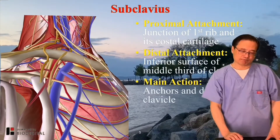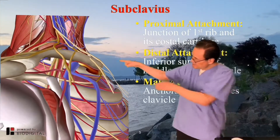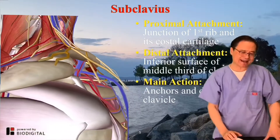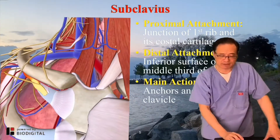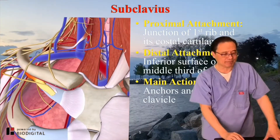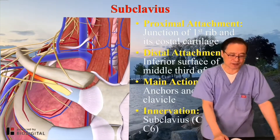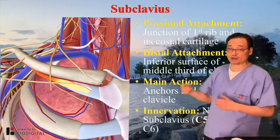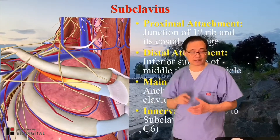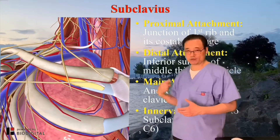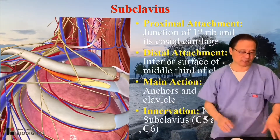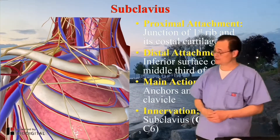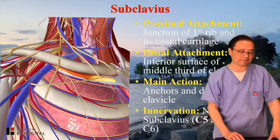Main action: because the fibers run in this direction, they depress the clavicle. The innervating nerve is the nerve to subclavius — remember the brachial plexus. We can review that when we study it. It comes from C5 and C6, especially C5.